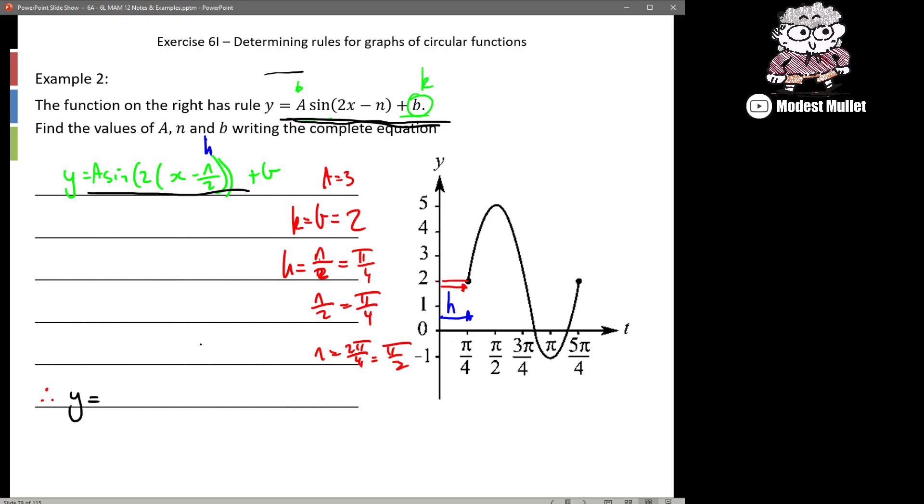We're given this way so let's write our final answer that way. So y = a, we figured out it was 3, sin(2x - π/2) + and a h or a k value, or b in our case, was 2. And that's it.